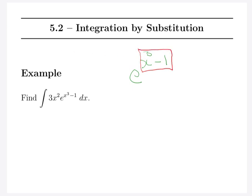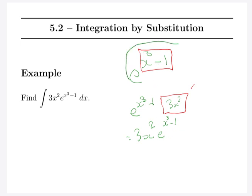If we took this e to the x cubed minus 1 as a function and took a derivative, we'd notice that we have this box here. If we were to take a derivative, what we'd end up with is e to the box, and then we'd have to multiply on the end by box prime, which is our 3x squared. So in here we'd have our 3x squared.